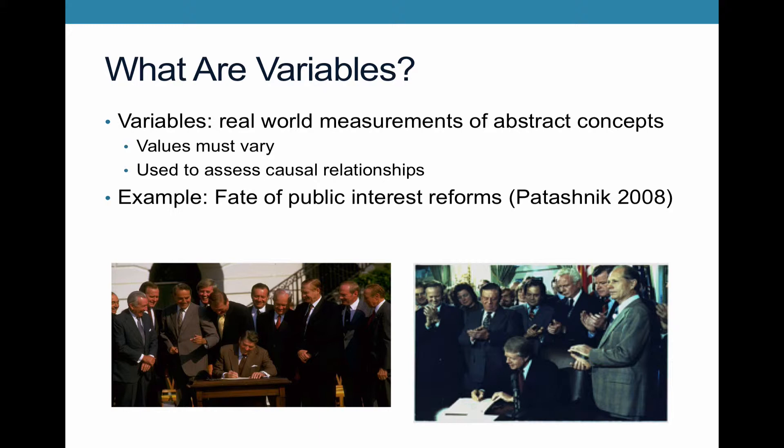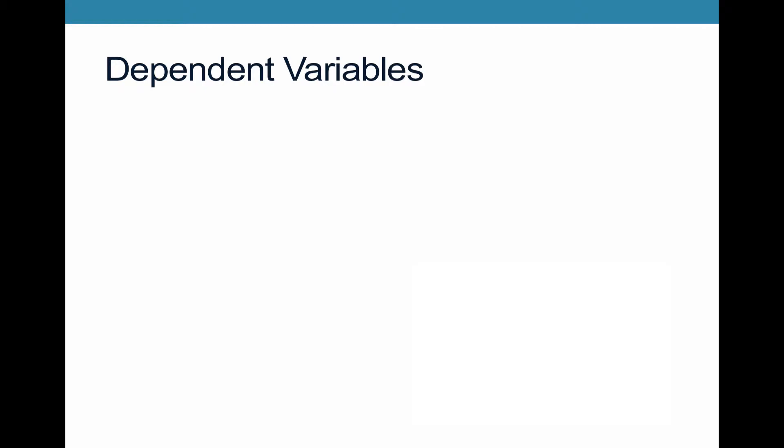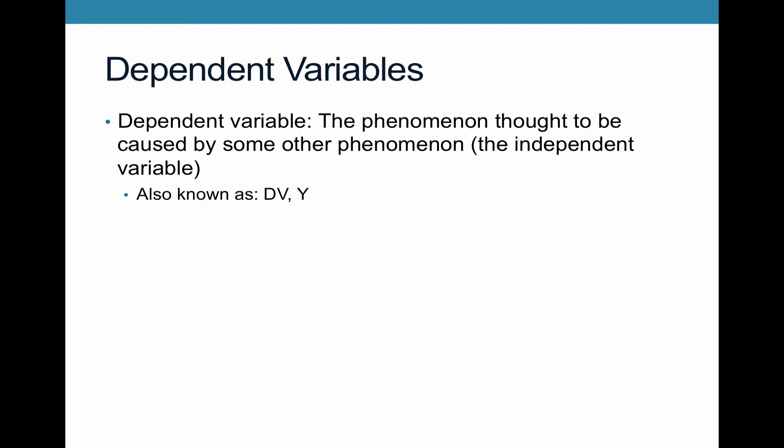Potashnik wants to look at the different fates of these kinds of reforms. A dependent variable, in general, is a phenomenon that is thought to be caused by some other phenomenon — the independent variable. We also call it the DV, or just Y. This is the outcome that we want to explain with our puzzle.